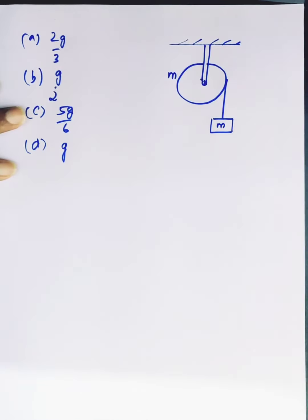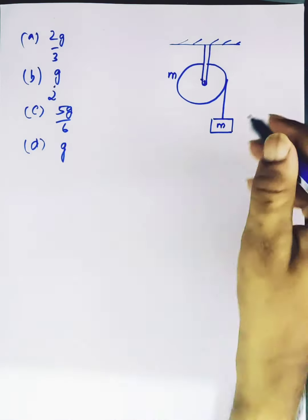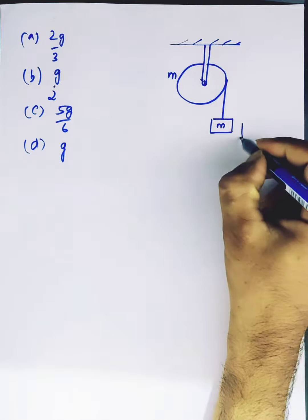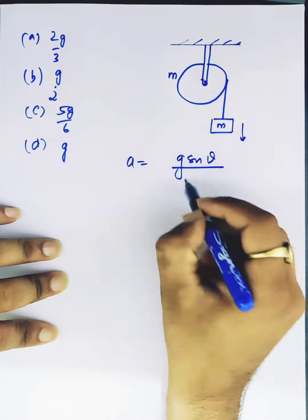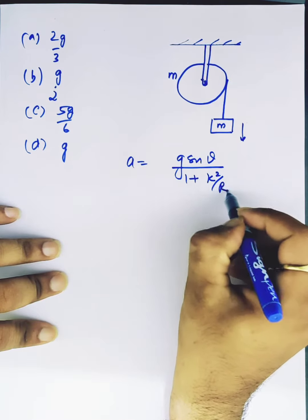So let's see the options. This was a question in which we have to find the mass acceleration. First I will tell you that the general formula is g sin θ upon 1 plus k² by r².